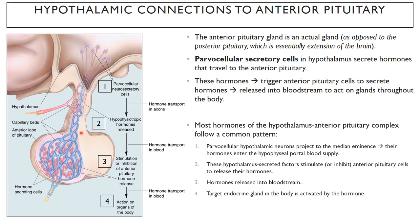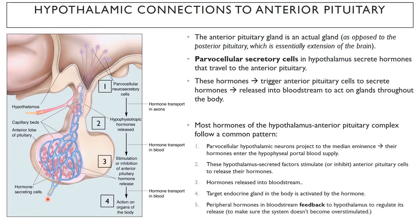Many of the hormones released from the adenohypophysis target another gland, which receives that input and is induced to release its own hormone as well. The peripheral hormones released by those glands then feed back onto the hypothalamus in order to regulate its release. This is referred to as negative feedback, ensuring the system doesn't become overstimulated. We'll talk about that in detail when we discuss stress hormones and sex hormones.